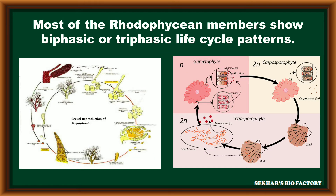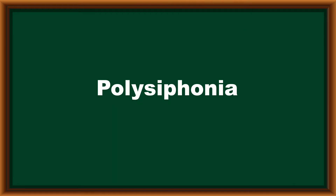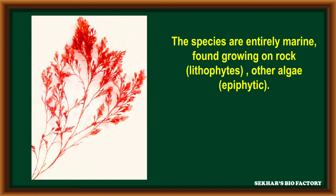Most of the Rhodophyta members show biphasic or triphasic life cycle patterns. These are the general characters of these members. Common examples of Rhodophyta members include Polysiphonia, Porphyra, Gracilaria, and Gelidium. The first example is Polysiphonia. The species are entirely marine in nature, found growing on rock surfaces, so such members are called lithophytes.